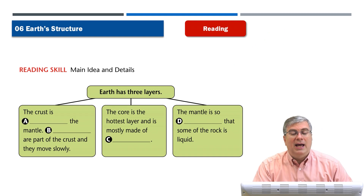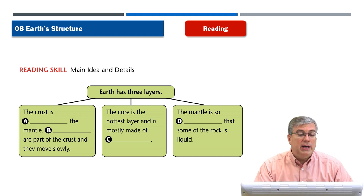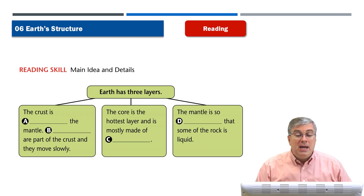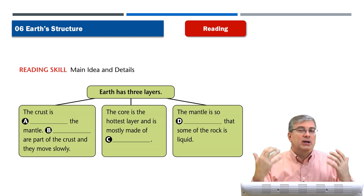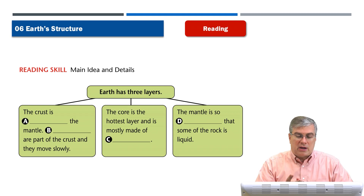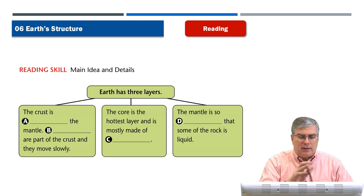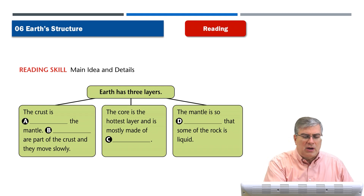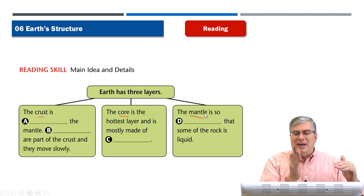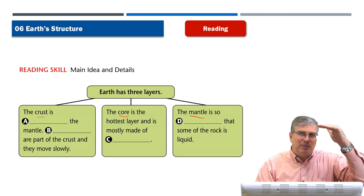How were the ideas in the reading passage organized? We have main ideas and then details to support that main idea. The main idea is simple: Earth has three layers. Then we can talk about the crust, the mantle, and the core. It should really be organized crust, mantle, core — top to bottom — to keep good organization.